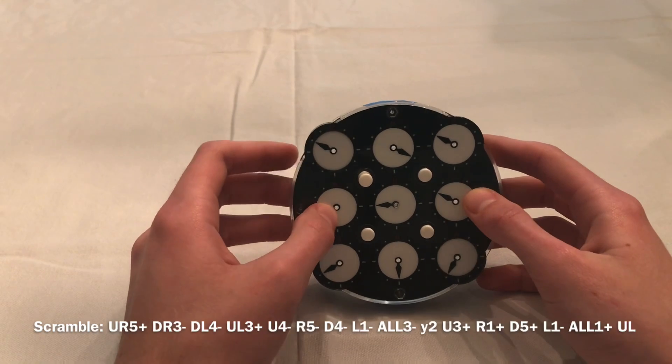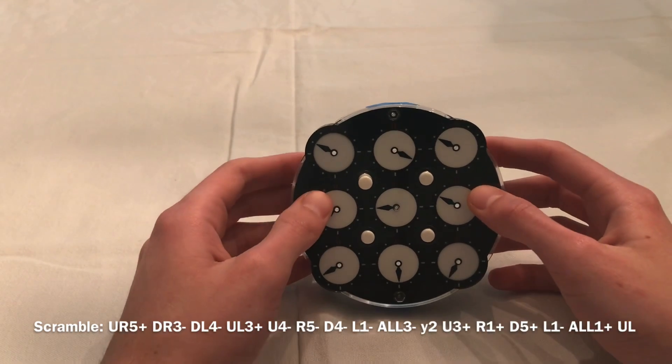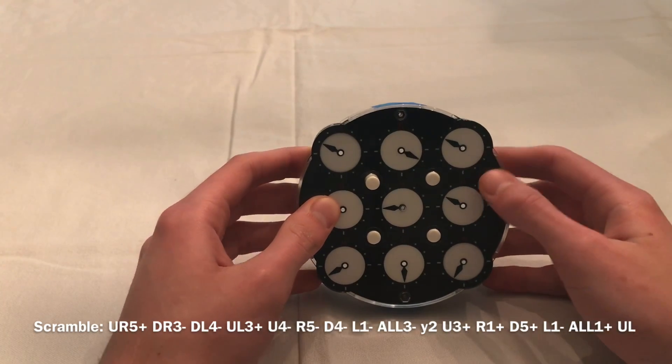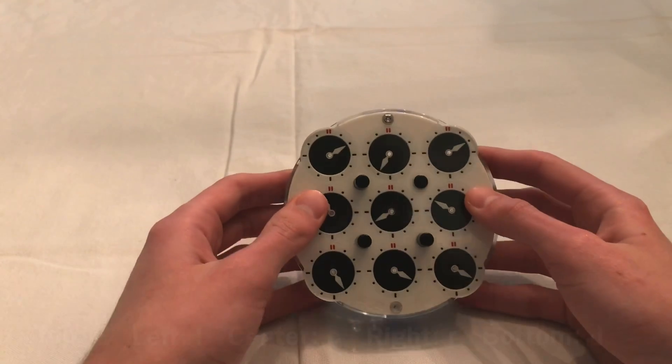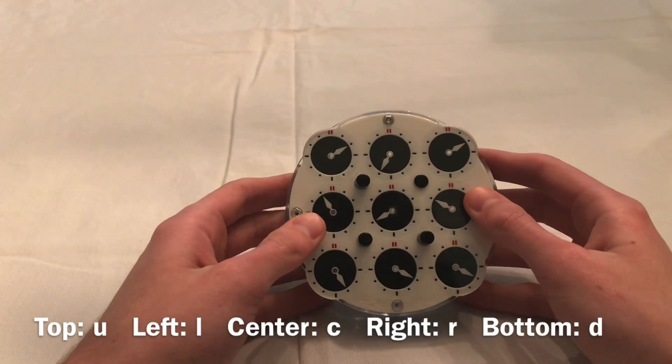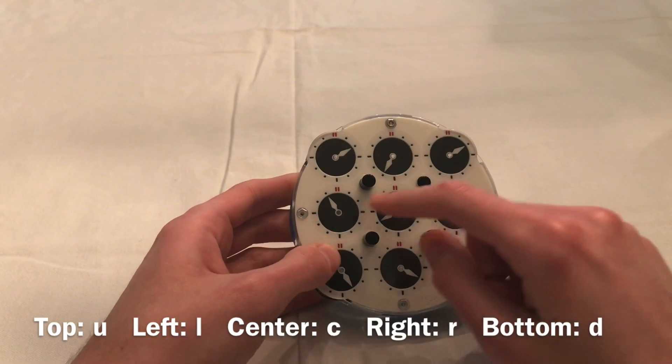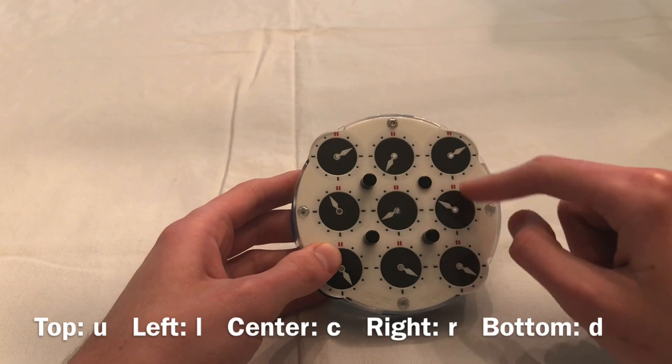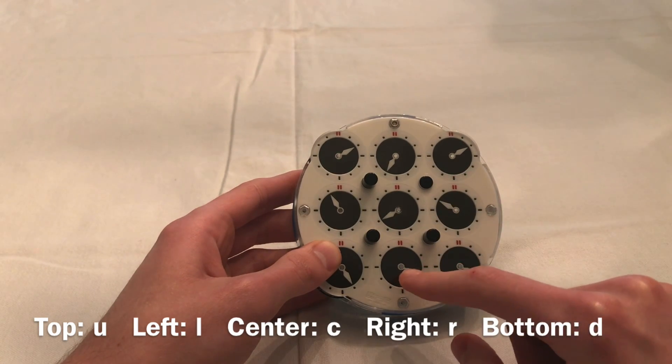For the no-flip method, inspection time is precious. This will be when you will be calculating what moves you need to do on the front to solve the cross on the back. For simplicity, I will be referring to the top clock as U, the left edge as L, the center as C, the right edge as R, the bottom edge as D.